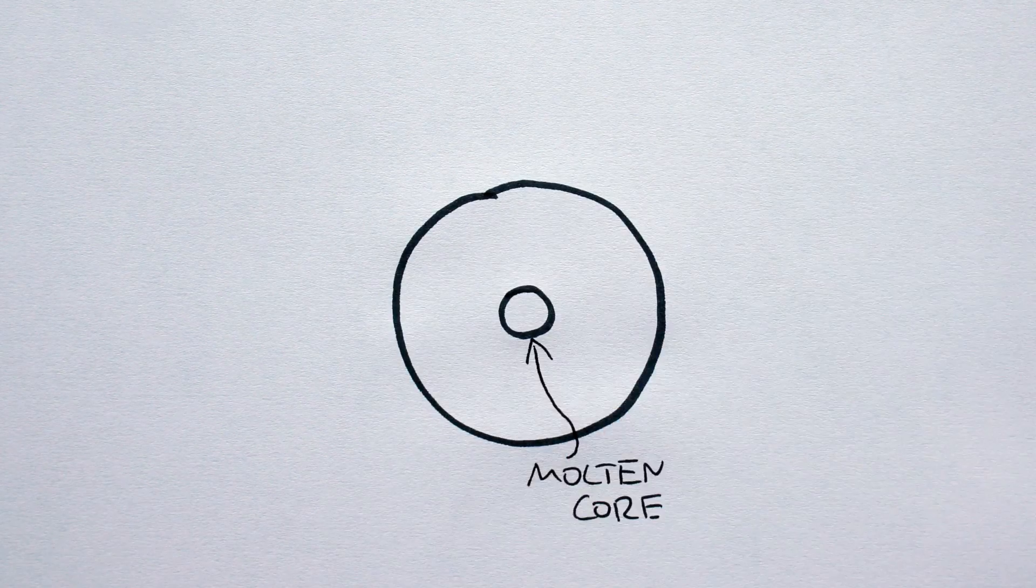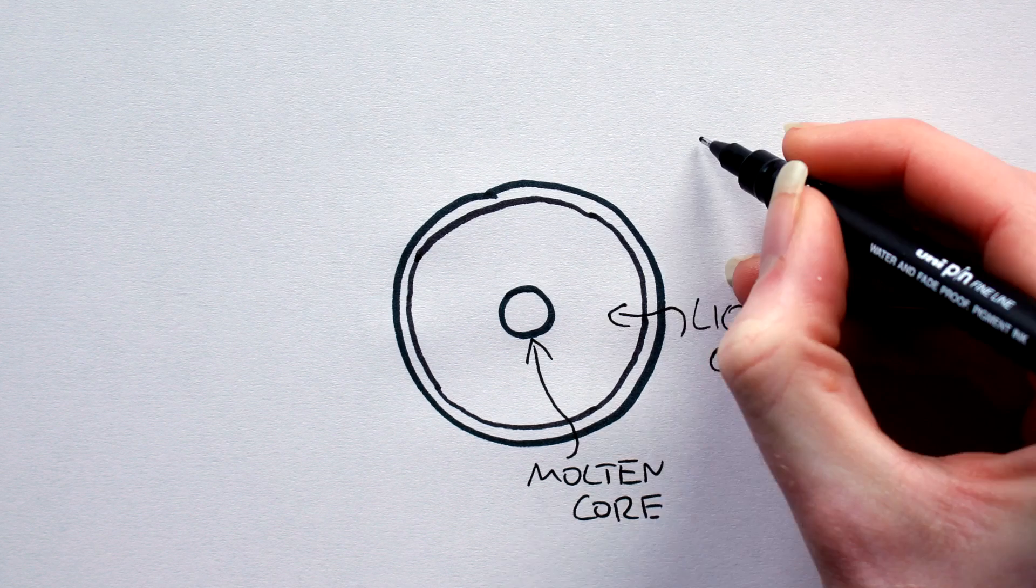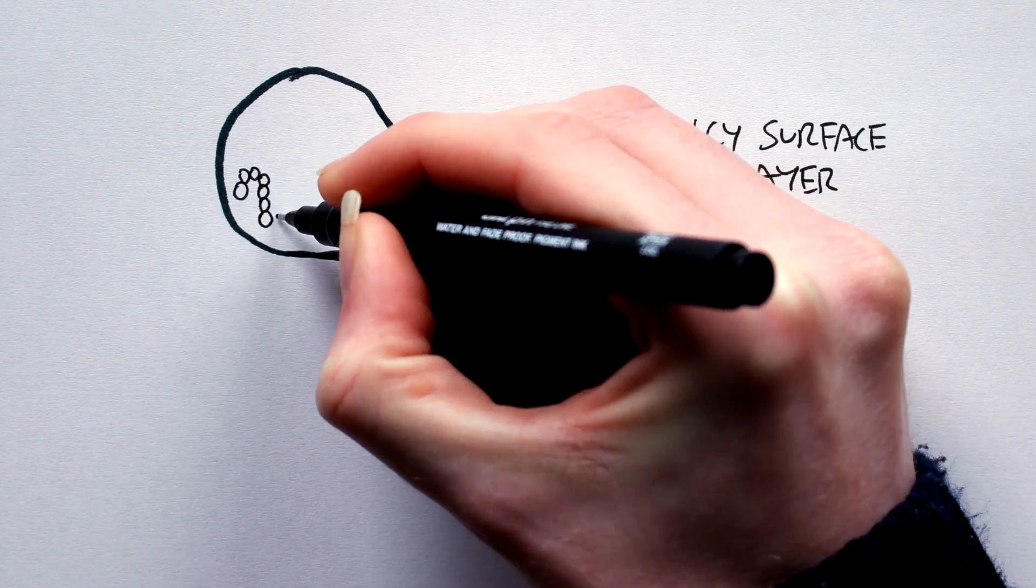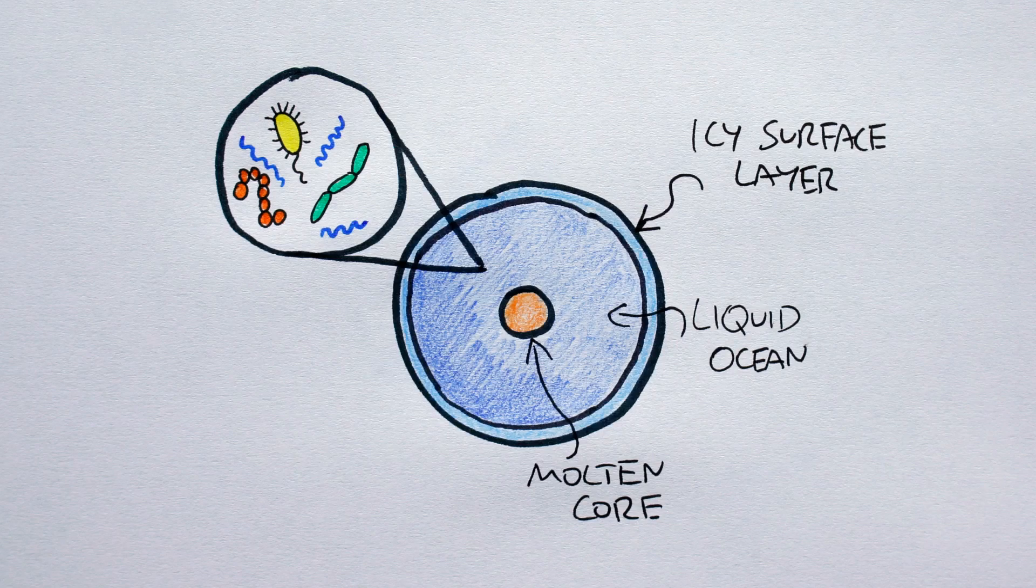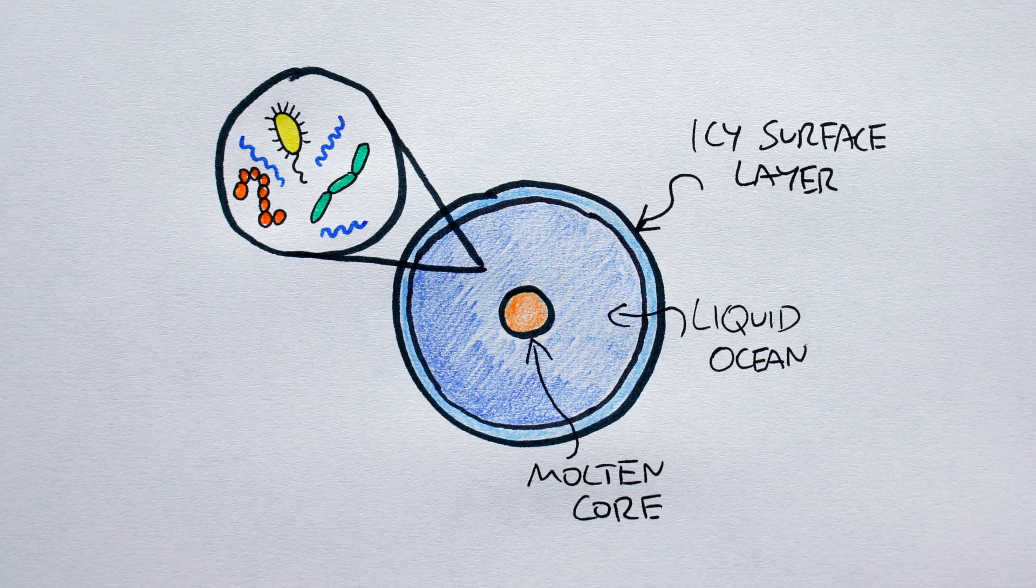Interestingly, if an ice planet were warmed by a molten core or experienced internal heating due to gravitational interactions with another object, a subsurface liquid ocean may well be present. Life could evolve in such an ocean. However, subsurface plants and microorganisms would favor chemosynthesis over photosynthesis as sunlight would be blocked by the icy surface layer.